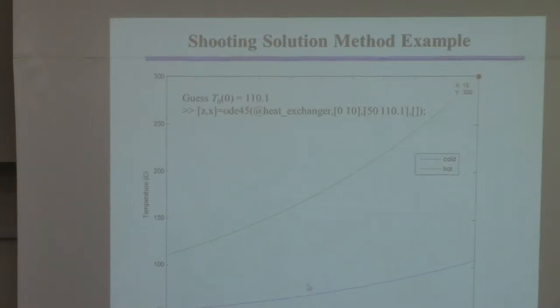The cold stream enters at 50, and I didn't actually show you over here, but it exits at, I don't know, 107.2? I'm just guessing that value, something like that.